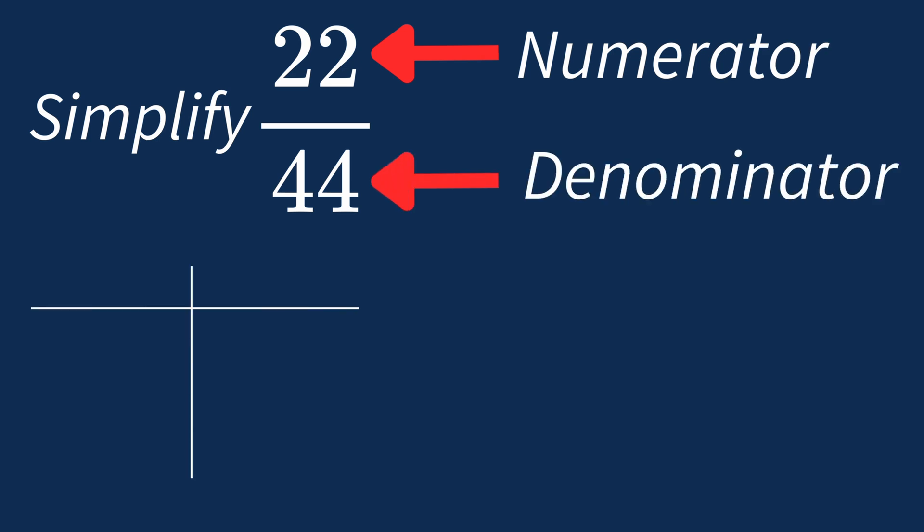First, let's list out the factors for each. For 22, the factors are 1, 2, 11, and 22.